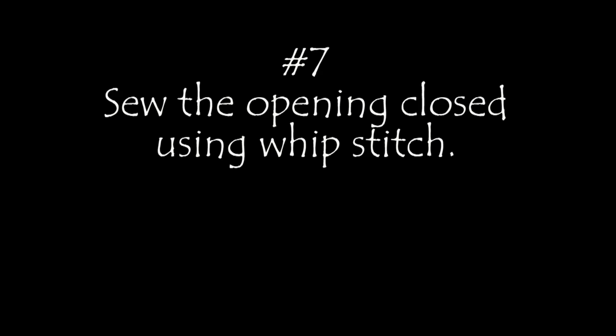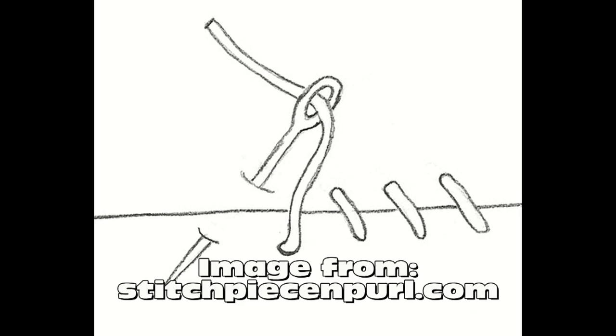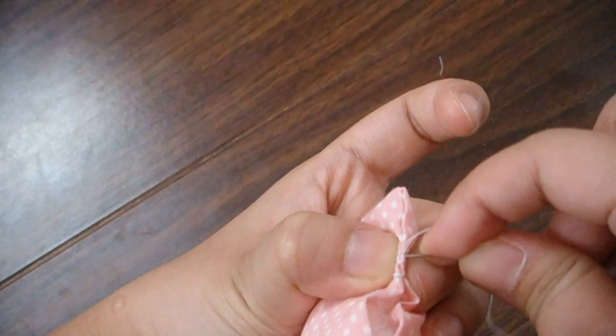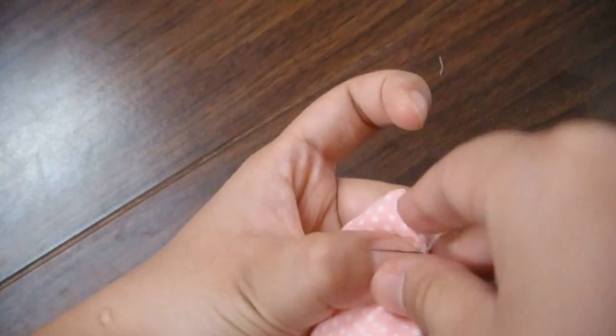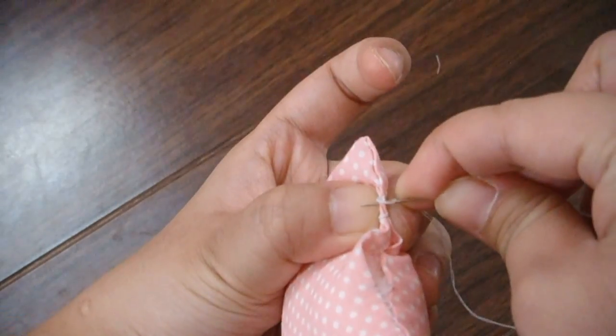Now I'm right handed so whip stitch is basically going from one end to the other just going right to left, right to left, looping or spiraling over the fabric to make sure that it is sealed.